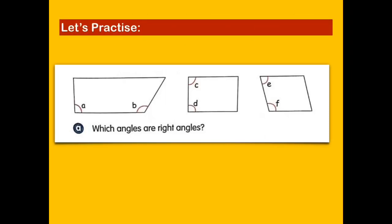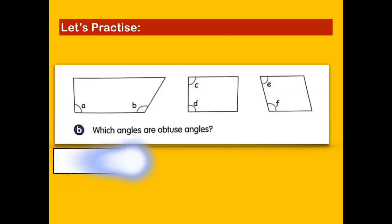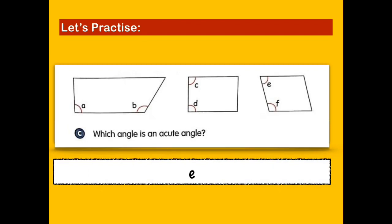Look at the given figures. Which angles are right angles? Angles A, C, and D are examples of right angles. Look at the given figure. Which angles are obtuse angles? Angles B and F are examples of obtuse angles. You're doing great! Let's try another one. Which angle is an acute angle? The answer is angle E. Angle E is an example of an acute angle.